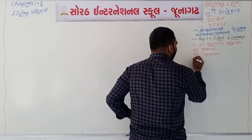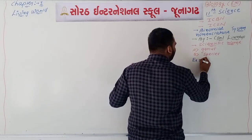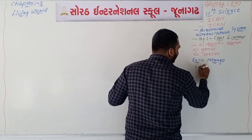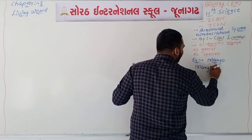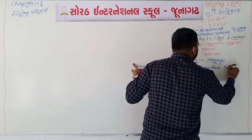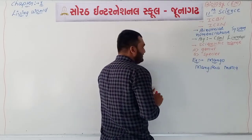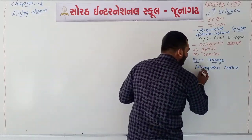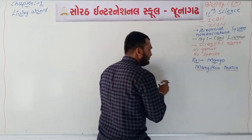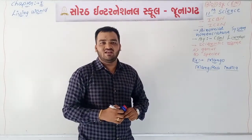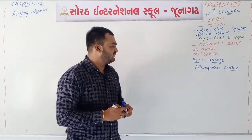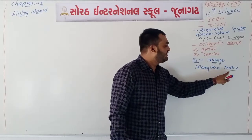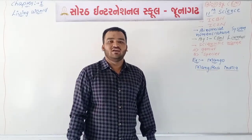For example, the scientific name of mango is Mangifera indica. Mangifera indica is one type of species. The rules are: if you are writing the scientific name, underlining is must; if you are typing the scientific name, italic format is must. The first letter of the genus name must be capital, while the rest of the genus and the full species name will be in smaller letters.